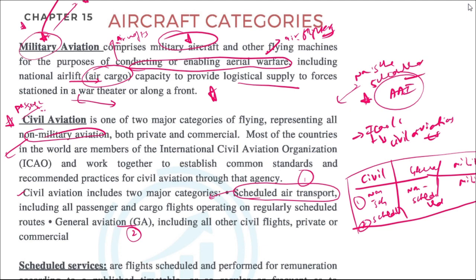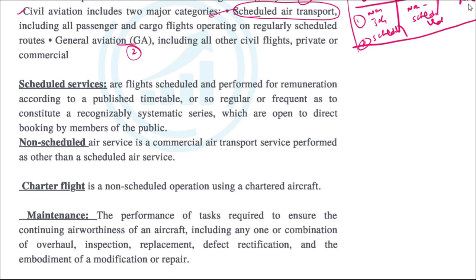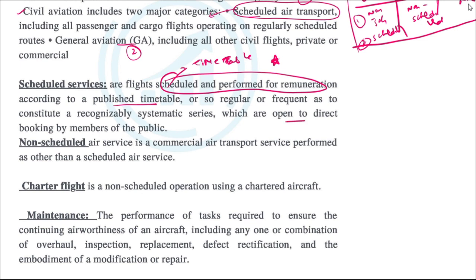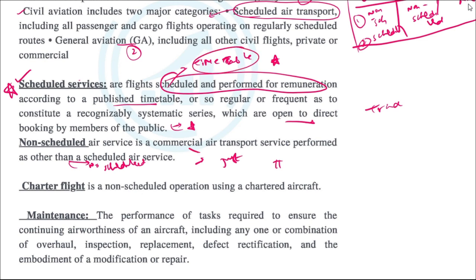Scheduled services are flights which are scheduled and performed according to a published timetable. The timetable is published beforehand and is open to direct booking by members of the public. Traditional airlines operate as scheduled services. Non-scheduled services have no fixed schedule — they may fly with just a few hours' notice. The basic difference is that scheduled services have a fixed published timetable, whereas non-scheduled services do not.